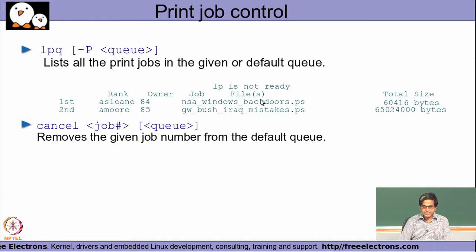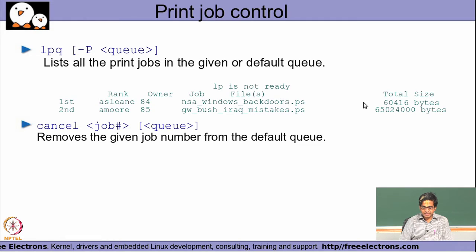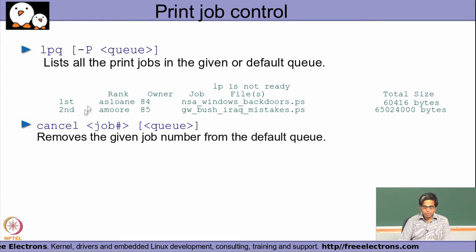If I decide I want to cancel a particular print job — assuming it has not already started on the printer — I can run the cancel command followed by the job number to remove it from the queue. For example, if a job in the output is around 65 MB which the user sent by mistake, the administrator can cancel that job by number and it will be deleted from the print queue.